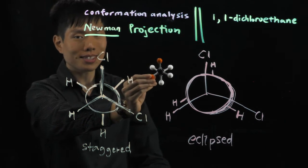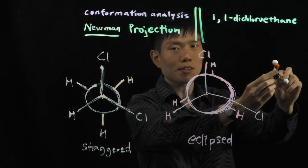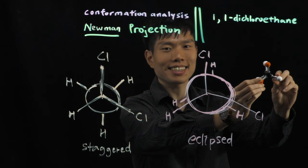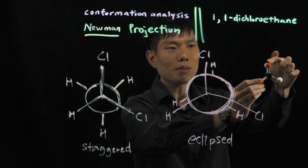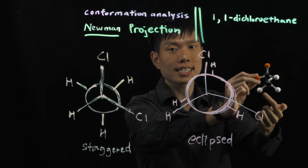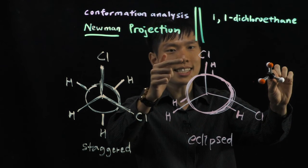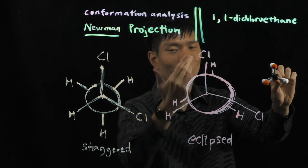Now, for the eclipsed conformation, you see that when I try to block the bonds using the front carbon, here, chlorine blocking the one at the back, chlorine at the front here blocking the one at the back, right? You see? So, again, there's only one eclipsed conformation because that's all you can do.